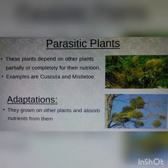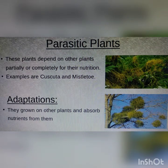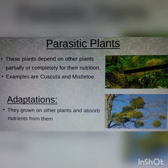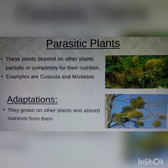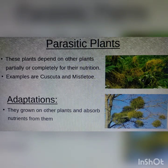Now moving on to parasitic plants. A parasite is an organism that depends on another organism for its food. These plants depend on other plants partially or completely for their nutrition. For example, the cascuta — the yellow plant — grows on another green plant and takes nutrition from it. The second example is mistletoe, which grows on a different tree and takes all the nutrition from that host plant. This is the adaptation of parasitic plants.